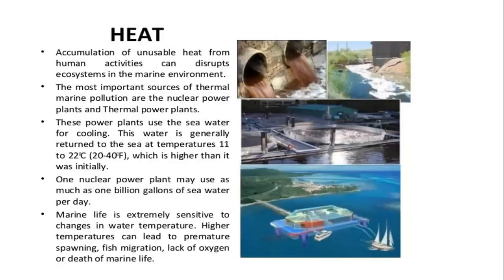Heat — the accumulation of excess heat from human activities can disrupt the marine ecosystem. Power plants use sea water for cooling and generally return it to the sea at a temperature 11 to 22 degrees centigrade higher than originally taken in. One nuclear power plant may use as much as a billion gallons of sea water per day. Marine life is extremely sensitive to changes in water temperature. Higher temperatures can lead to premature spawning, fish migration, lack of oxygen, or death of marine life.